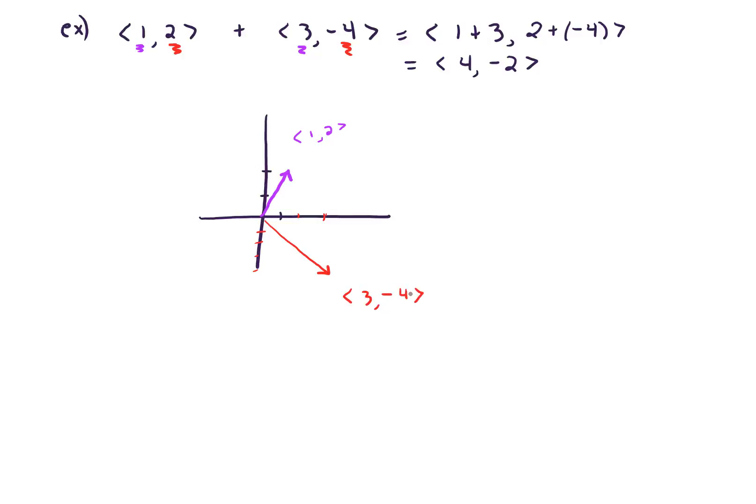And now to add up those two vectors, what we do is we make a little parallelogram. And if I can make my drawing somewhat to scale here, roughly speaking, the sum of our vectors here would be over 4 down negative 2.